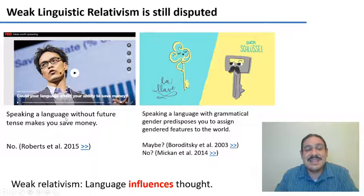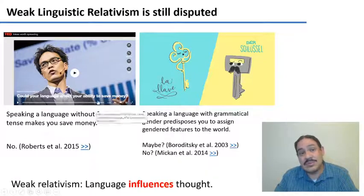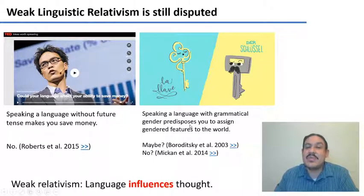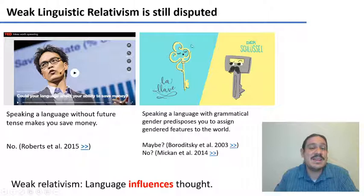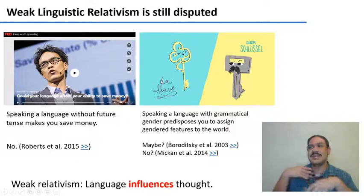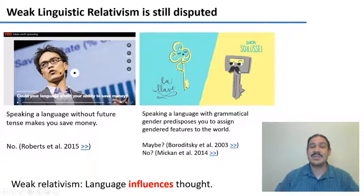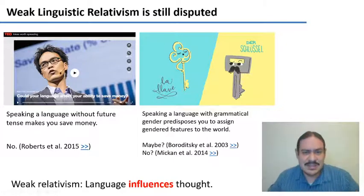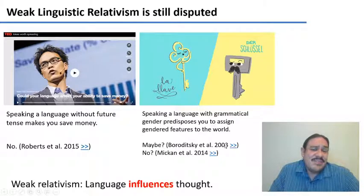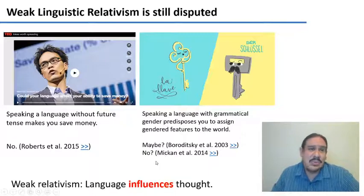This author basically said that speaking a language without a future tense makes you save more money — but in the end, it didn't turn out to be so. There are also authors who say that speaking a language with grammatical gender, like Spanish or German, predisposes you to assign gender features to things. For example, in Spanish, la llave (the key) is feminine, so speakers would describe it with stereotypically feminine qualities like being slender; whereas in German, where keys are grammatically masculine, speakers would assign masculine characteristics like being sturdy. However, later authors couldn't replicate the effect.